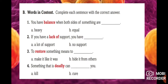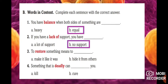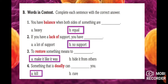Now exercise B — words in context. Complete the sentences. You have balance when both sides of something are equal. If you have a lack of support, you have no support. To restore something means to make it like it was. Something that is deadly can kill you. Answers: numbers one and two are letter B; numbers three and four are letter A.